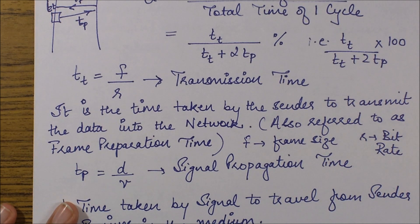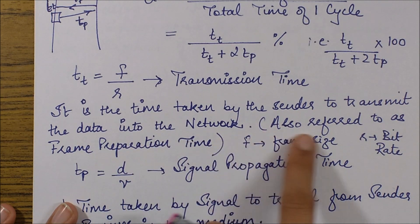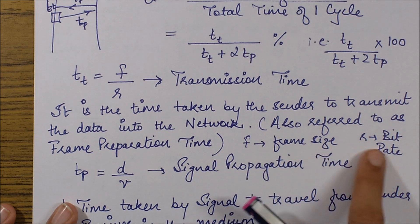It's the time taken by the sender to transmit the data into the network, also referred to as the frame preparation time. F is the frame size and r is the bit rate.